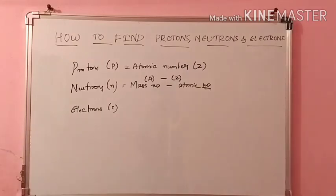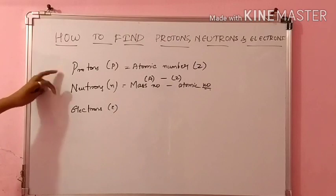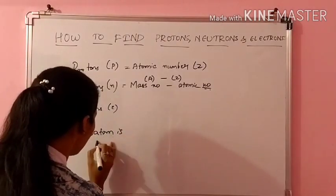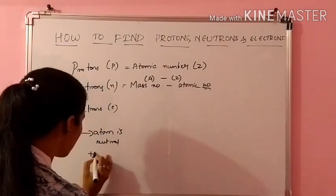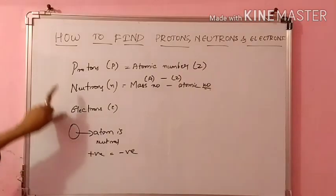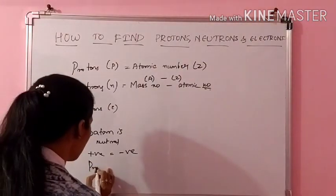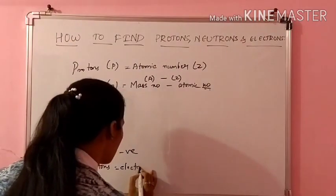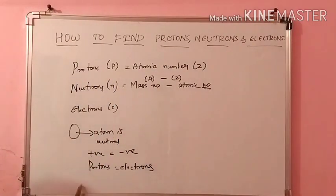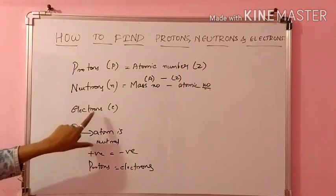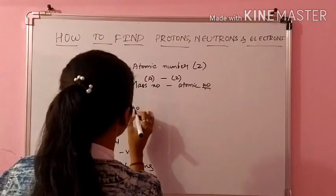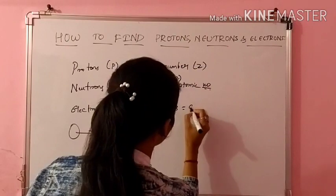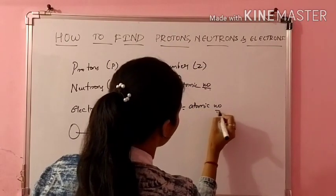Then electrons. Electrons are nothing but the same as protons. Why? Because if any atom is neutral, when is it said to be neutral? When positive charge is equal to negative charge. Positive charge is nothing but protons, and negative charge is nothing but electrons. So however many protons there are, that same number of electrons should be there. So electrons is equal to the number of protons, which is nothing but the atomic number, Z.